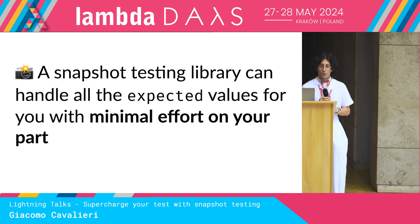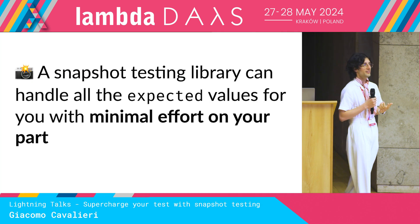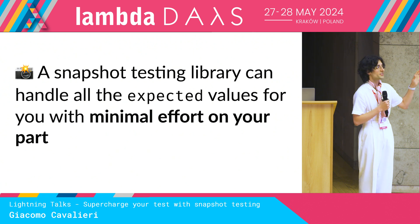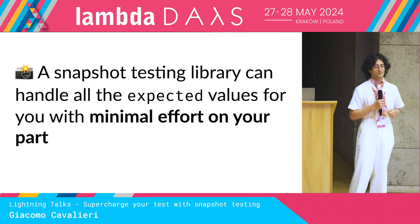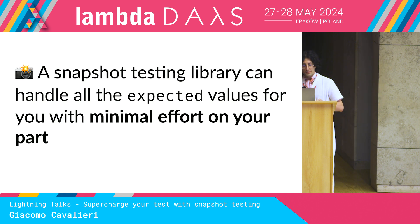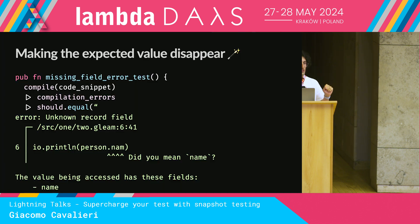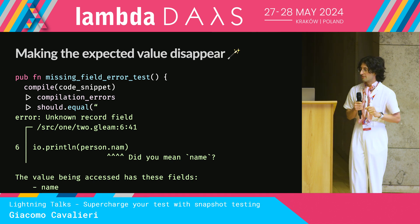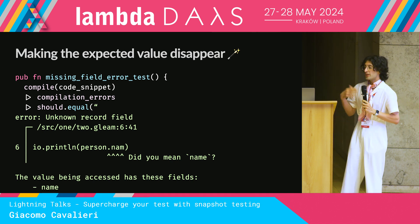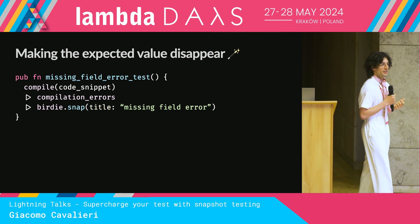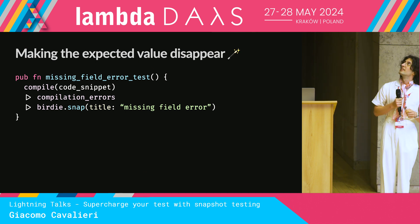And that's where snapshot testing comes into play. The problem is that snapshot testing can free us of the burden of writing those assertion strings, for example. So how can it do that? It sounds almost too good to be true. It looks a bit magical, so don't blink — I have nothing up my sleeves, but don't blink or you're going to miss it. We can make that expected value disappear using a snapshot testing library, and this is what it would look like.